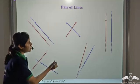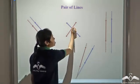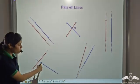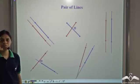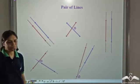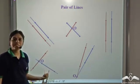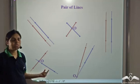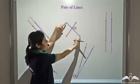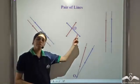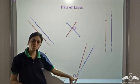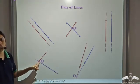We see that these two lines meet at this point. Let's call this point as point O. This point where these lines meet is called the common point — because it is common to both the lines. Point O is on this red line as well as on this blue line, so this point is common to both the lines and is called the common point.